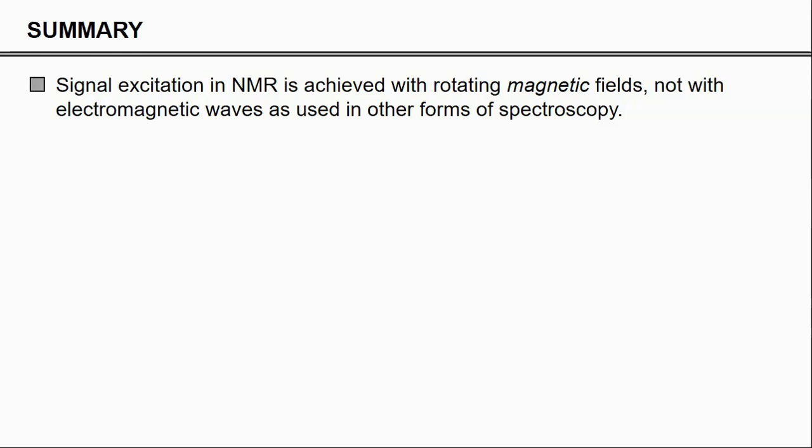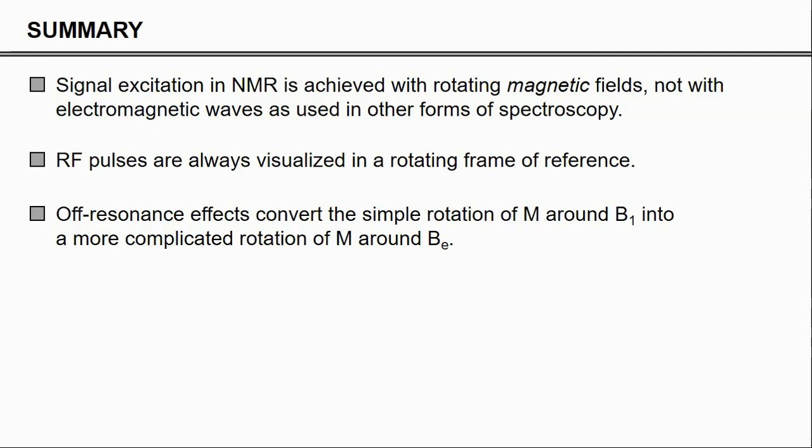Okay, in summary, signal excitation in NMR is achieved with rotating magnetic fields, not electromagnetic waves as is used in other forms of spectroscopy. RF pulses are always visualized in the rotating frame of reference. And for on-resonance spins, the rotation of the magnetization is very simple. It just rotates around the B1 field towards the XY plane.